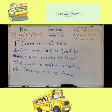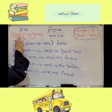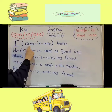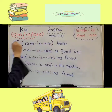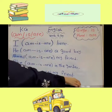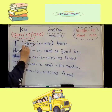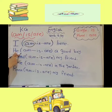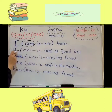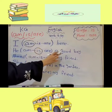Let's do practice on the verb to be lesson. Choose the correct answer: am, is, or are. I takes am — I am here. He takes is — he is a good boy.